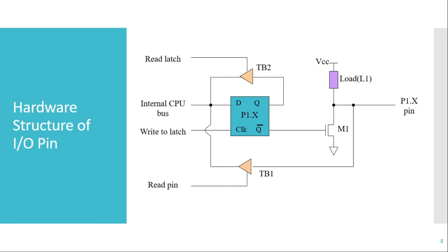Now we will see how the hardware structure of an I/O pin is present in 8051. This structure is specifically for a Port 1 pin. We can have a similar structure for all other port pins, but since the other ports have multiplexed functions there is a slight difference. Port 1 is not having any other alternate function, so it is the simplest structure of all the ports. This is the structure for an individual pin, P1.X, where X stands for 0 to 7.